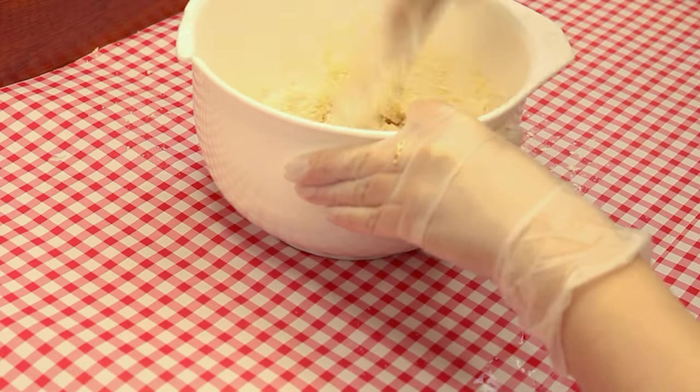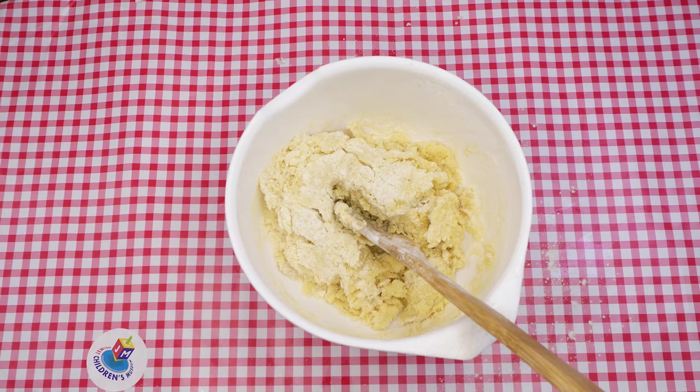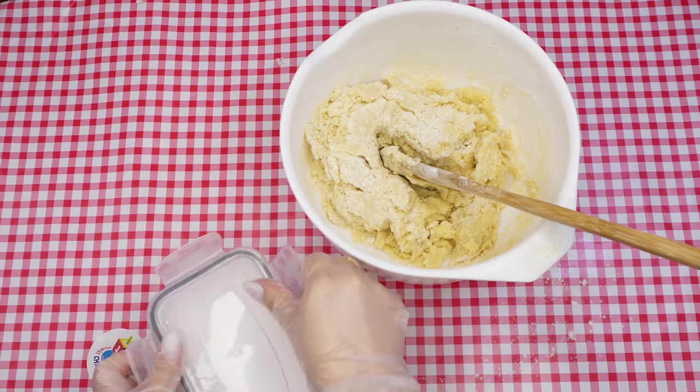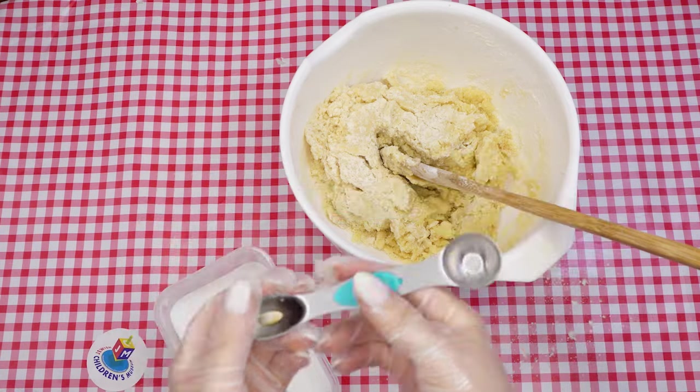Hold tight while we add the next couple of ingredients. Measure one and a quarter teaspoons of baking powder and a quarter teaspoon of salt into the bowl, then mix.